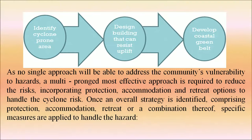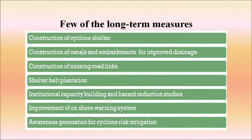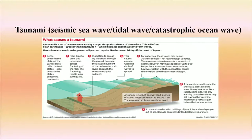Cyclone management incorporates protection, accommodation and retreat options. Once an overall strategy is identified — comprising protection, accommodation, retreat or a combination — specific measures are applied. Long-term measures include: construction of cyclone shelters; canals and embankments for improved drainage; missing road links; shelter belt plantation; institutional capacity building and hazard reduction studies; improvement of offshore warning systems; and awareness generation for cyclone risk mitigation.